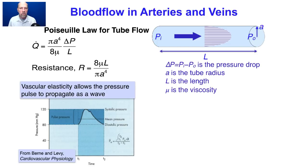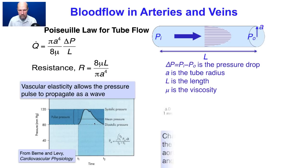Poiseuille's law is derived for a rigid tube, but blood vessels are not rigid. Their elasticity allows the pressure pulse to propagate as a wave. The pressure pulse wave in the arterial system has an amplitude of about 40 mmHg, from a diastolic pressure of 80 mmHg to a systolic pressure of 120 mmHg. As the pressure changes in the blood vessel, the diameter changes as well, and this propagates along the arterial system as a pulse wave. The amplitude of the diameter pulse is much larger in a young subject than an old subject, whose vessels are stiffer.